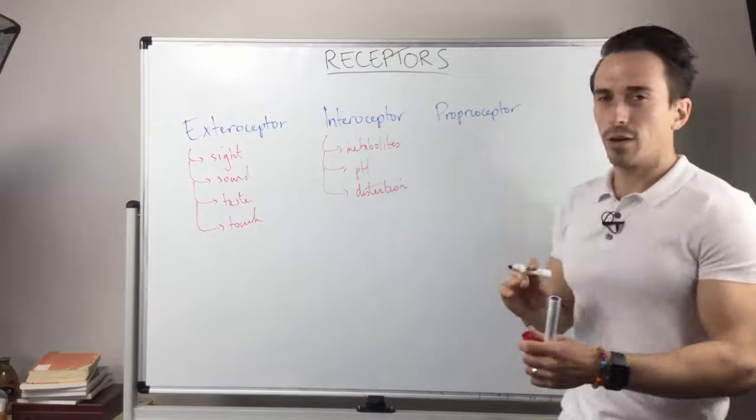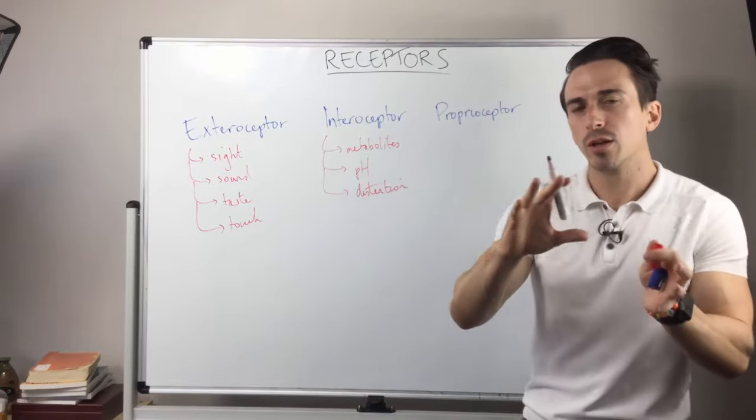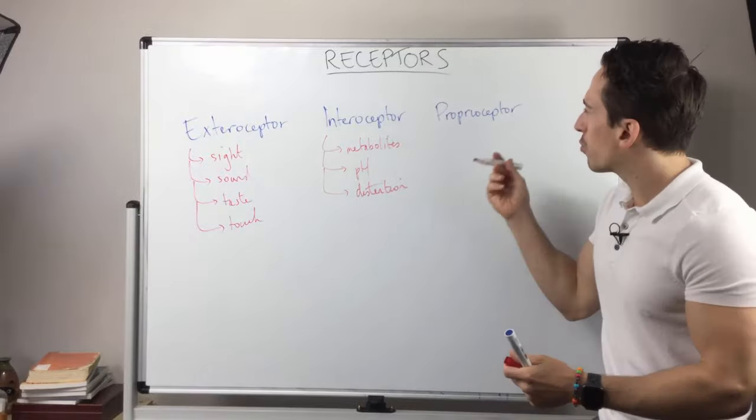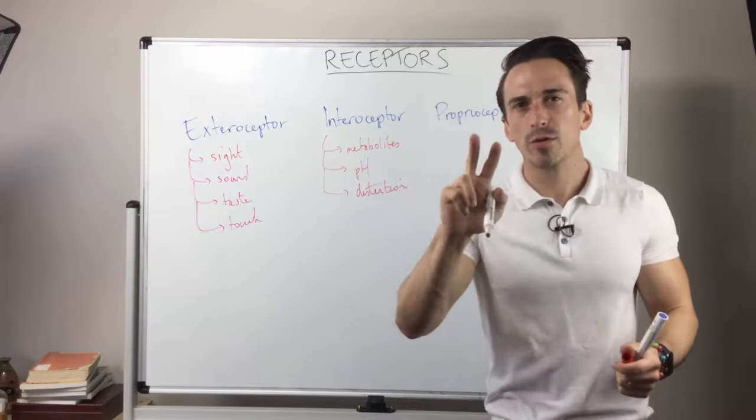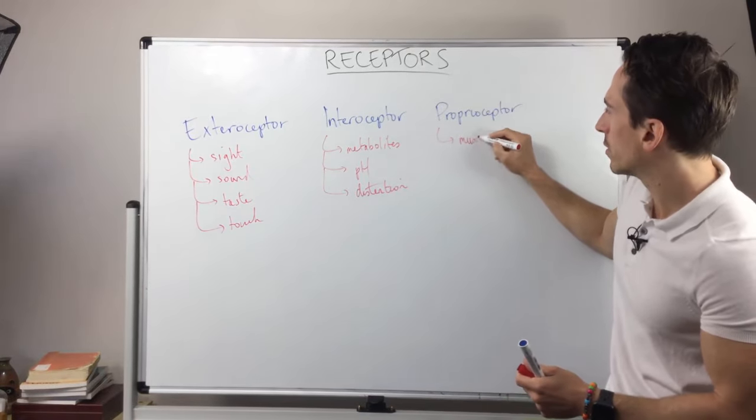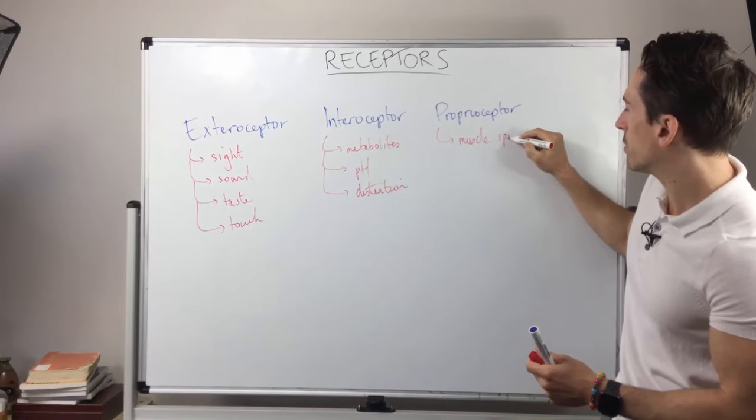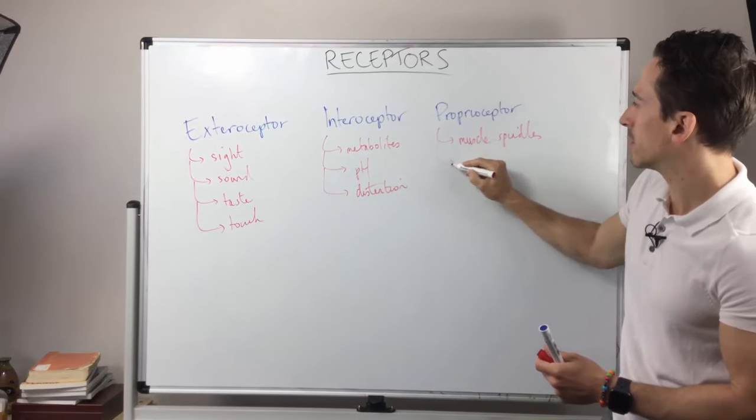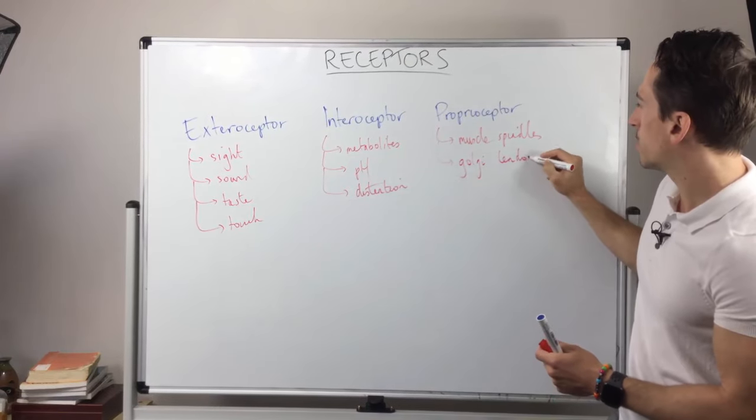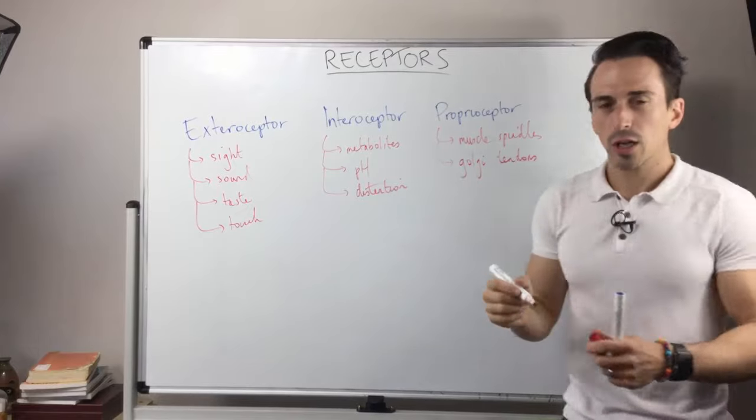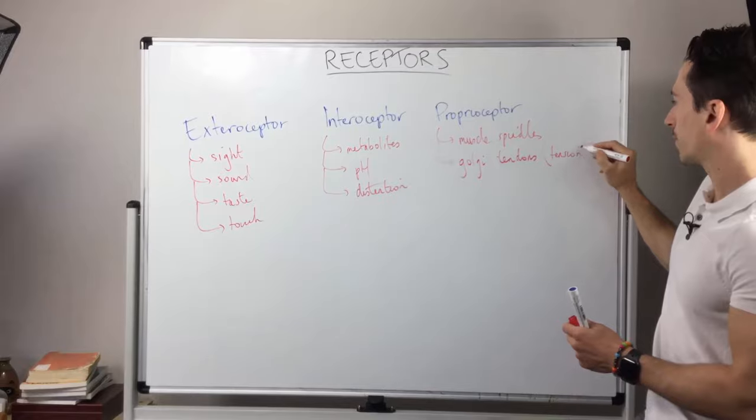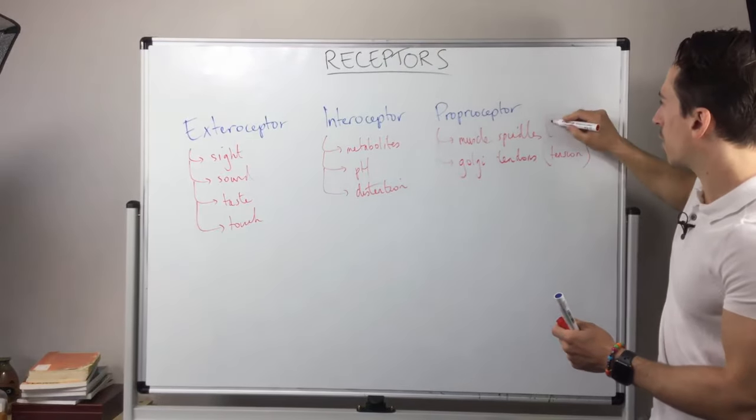When we look at proprioceptors, proprioceptors look at movement of the body. They look at where the body is in its own space. Proprioceptors are made up of two primary types of receptors which we can call muscle spindles and Golgi tendons. Golgi tendons look at the tension of a muscle and muscle spindles look at the length of a muscle.